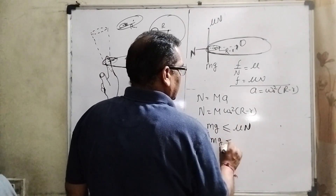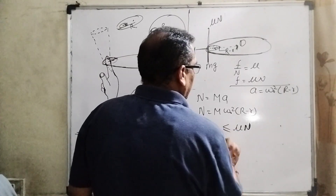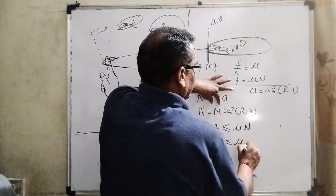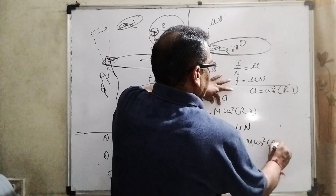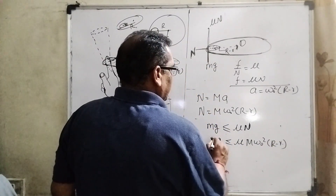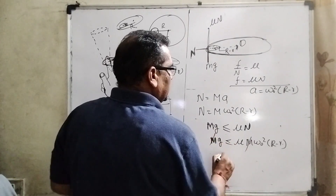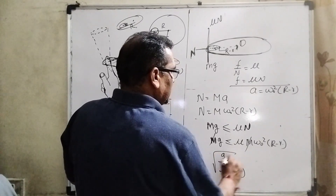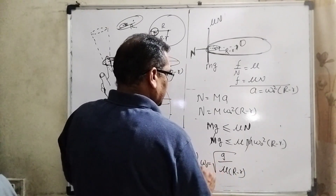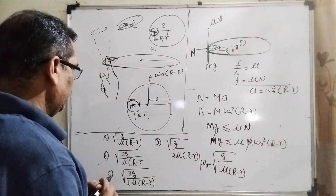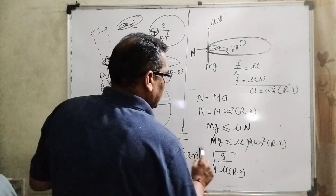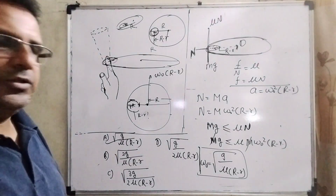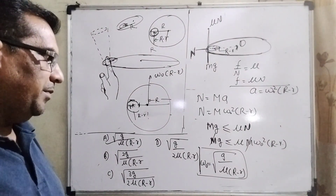Cancelling M from both sides: g ≤ μω₀²(R − r). Solving for ω₀: ω₀ ≥ √(g / μ(R − r)). So the minimum value of ω₀ is √(g / μ(R − r)). This matches option (A), so the correct answer is A.